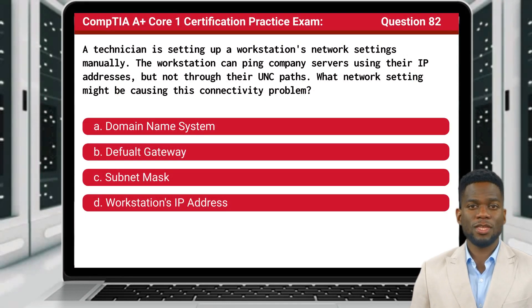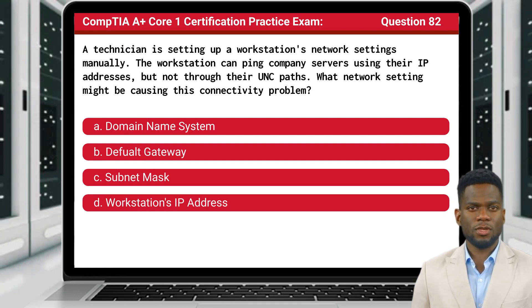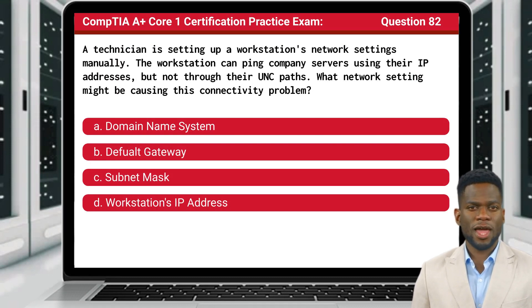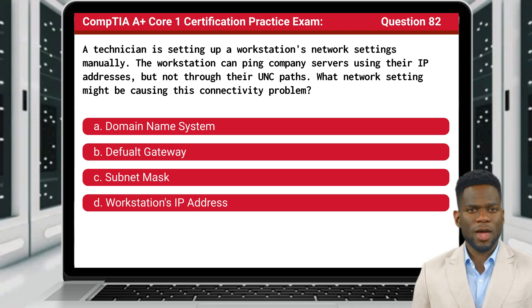Question 82. A technician is setting up a workstation's network settings manually. The workstation can ping company servers using their IP addresses, but not through their UNC paths. What network setting might be causing this connectivity problem?